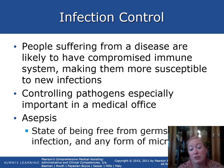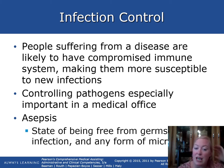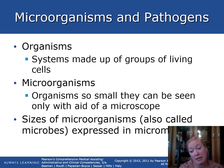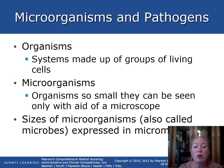Controlling pathogens is especially important in a medical office. Asepsis is a state of being free from germs, infection, and any form of microorganisms. Organisms are systems made up of groups of living cells — yourself, your dog, your cat. Microorganisms are organisms so small they cannot be seen except with a microscope. Their sizes are expressed in micrometers.